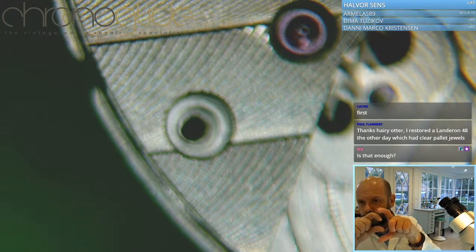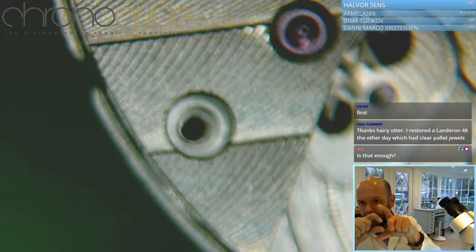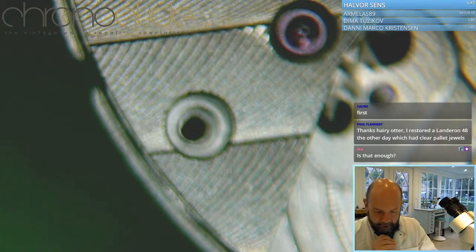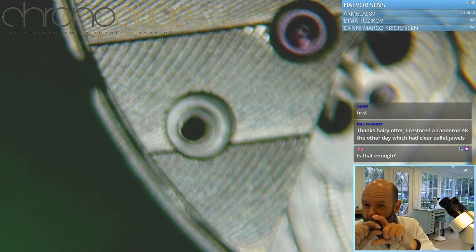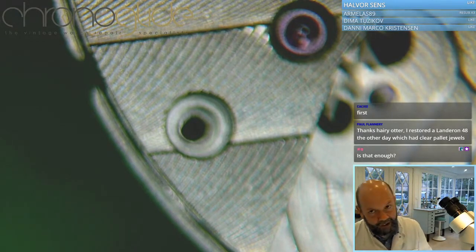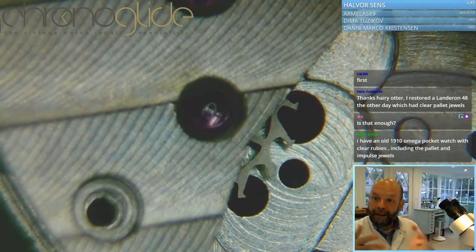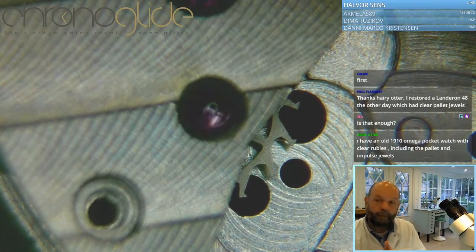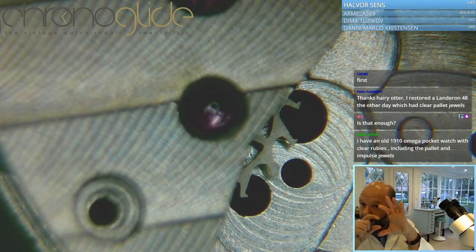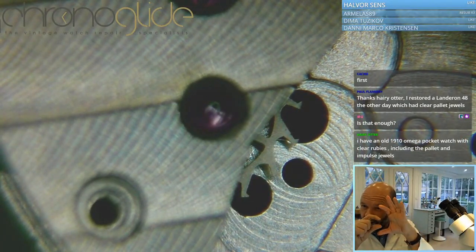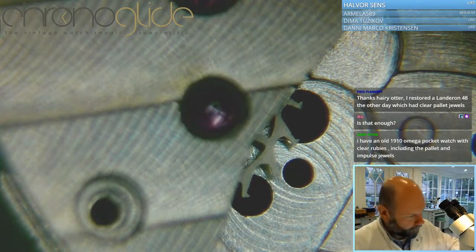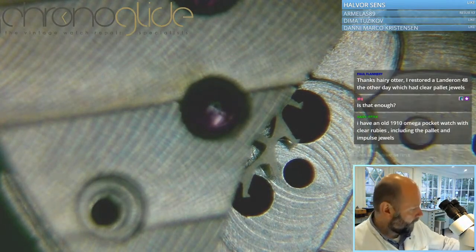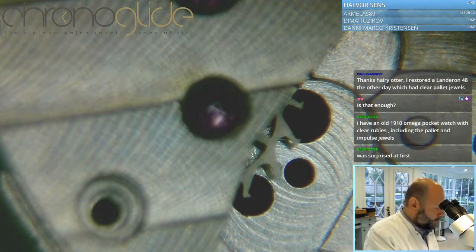If there is too much end shake, you just move one jewel or the other jewel and then you can move the parts a bit up or down. Especially with the escape wheel, it has to move with the pallet fork, so it's very easy to move it just a tiny bit. Then we have two screws.